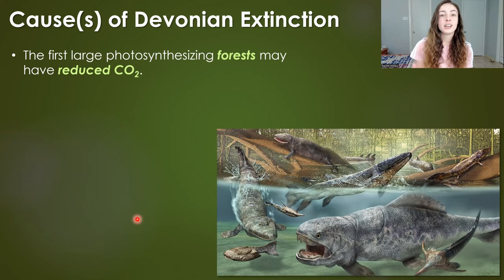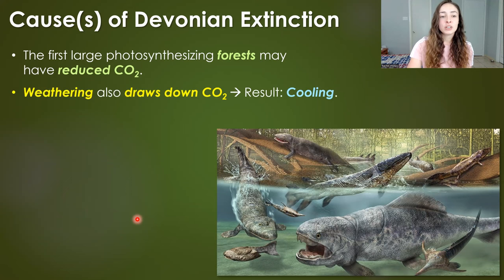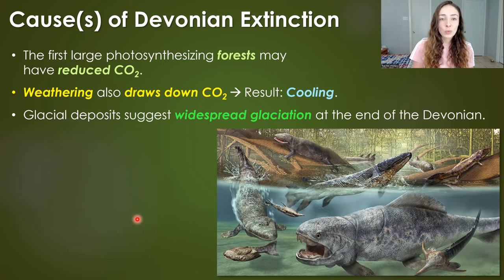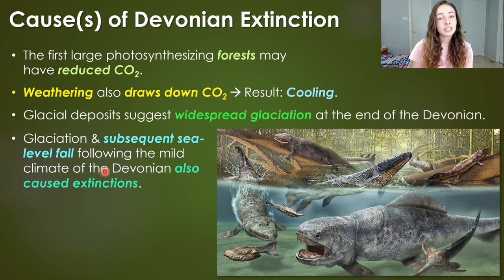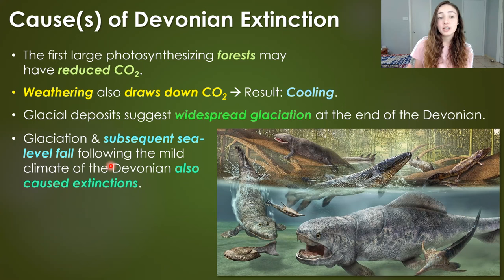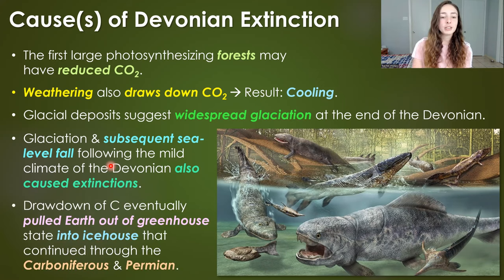The first large photosynthesizing forests that grew during the Devonian also likely reduced CO2 in the atmosphere, and weathering also draws down atmospheric CO2. The ultimate result of both of these processes drawing down CO2 is cooling. Glacial deposits suggest widespread glaciation at the end of the Devonian period, and the glaciation and subsequent sea level fall — after having the mild climate of most of the Devonian — caused major extinctions of organisms adapted to the warmer climate.